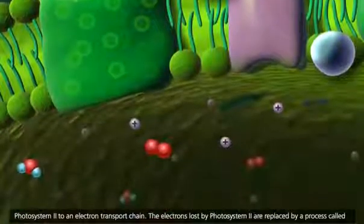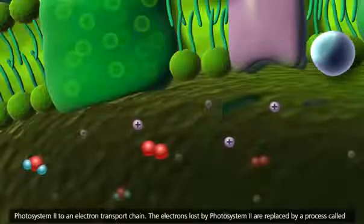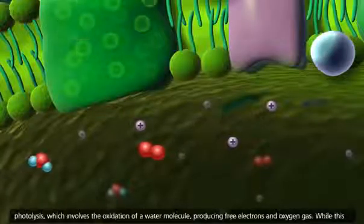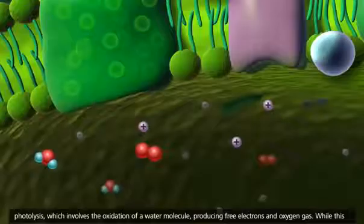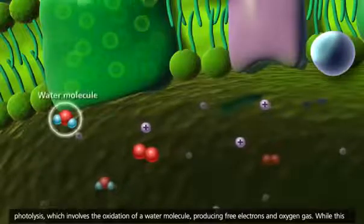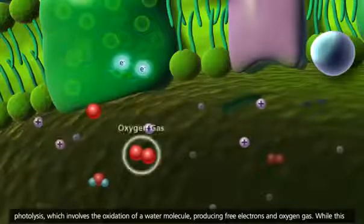The electrons lost by Photosystem II are replaced by a process called photolysis, which involves the oxidation of a water molecule producing free electrons and oxygen gas.